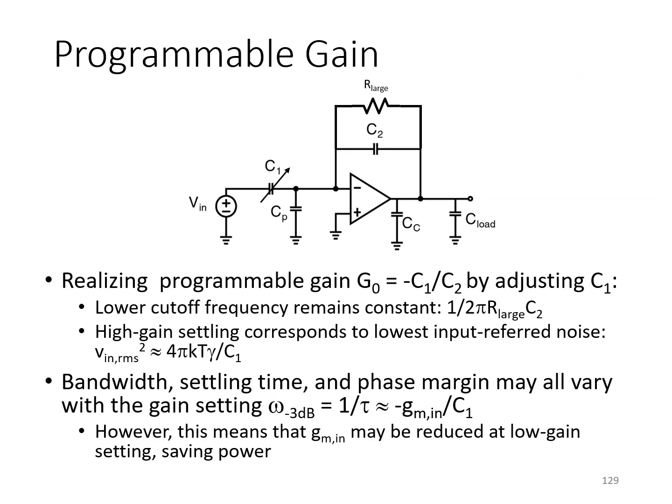The alternative is to realize the programmable gain by adjusting C1. Here, the benefits are exactly the opposite of the last case. The lower cutoff frequency formed by R_large and C2 now stays the same over all gain settings. Moreover, the highest gain setting is when C1 is the largest. That's also when you've got the best noise performance. The noise performance automatically changes with the gain setting as you vary C1 in just the way you'd like. It's a higher input referred noise at lower gain settings.